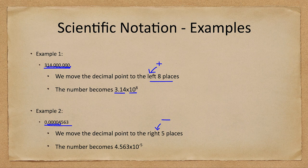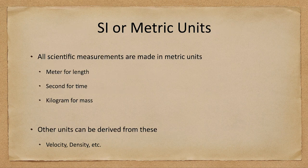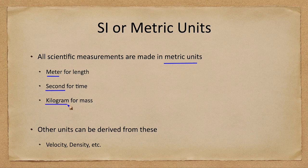Our first lab will let us look at a few examples of using numbers in scientific notation. As for units, from almost everything in the class we will be using the metric system — that is the meter for length, the second for time, and the kilogram for mass. These are the standard units.